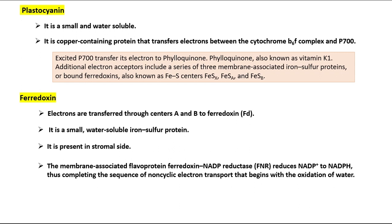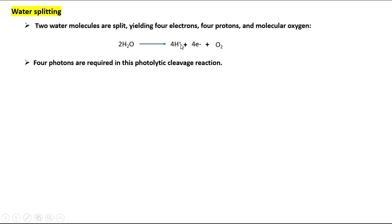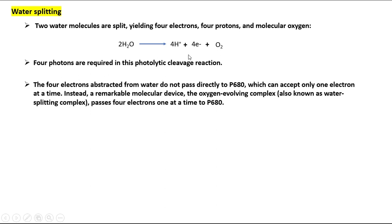In water splitting, two water molecules are split, yielding four electrons, four protons, and molecular oxygen. Four photons are required in this photolytic cleavage reaction. The four electrons abstracted from water do not pass directly to P680, which can accept only one electron at a time. Instead, a remarkable molecular device, the oxygen-evolving complex (also known as the water-splitting complex), passes four electrons one at a time to P680.